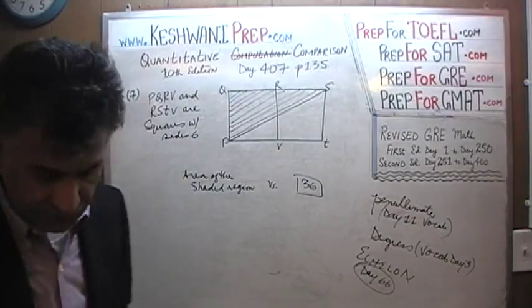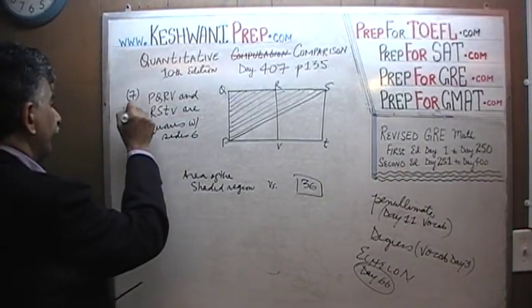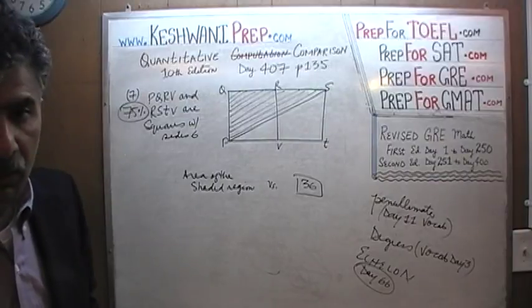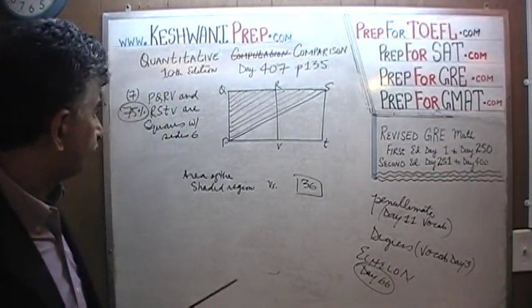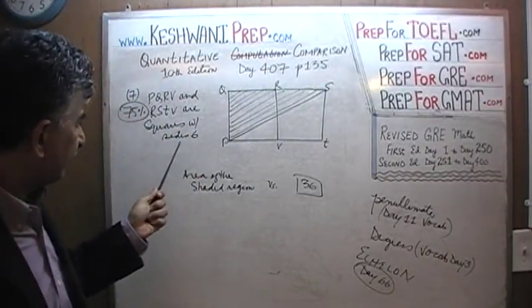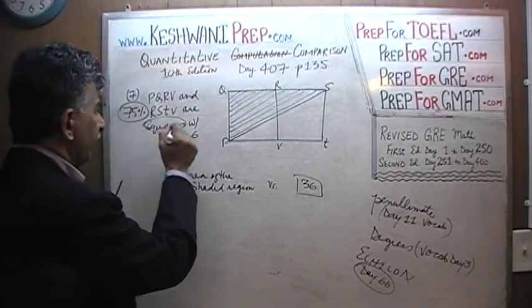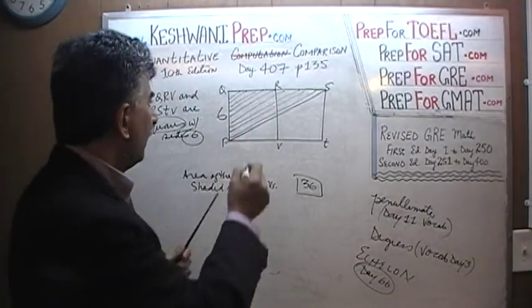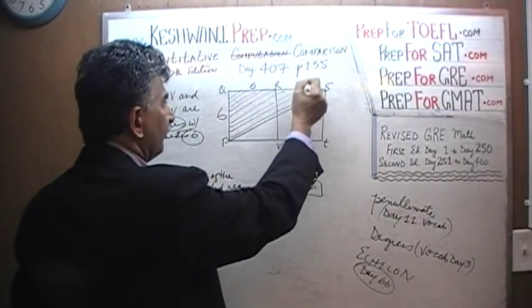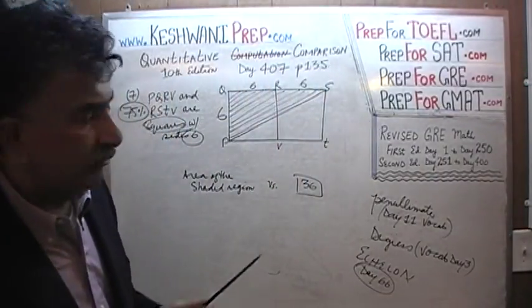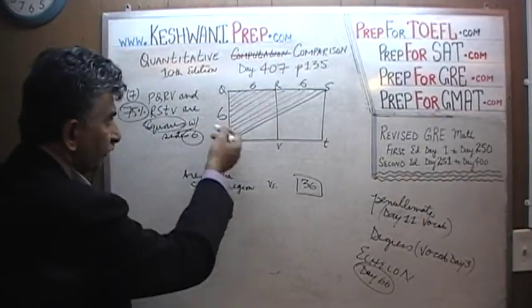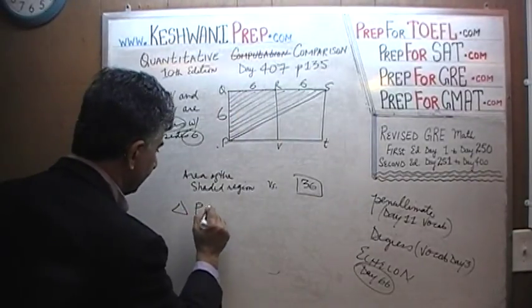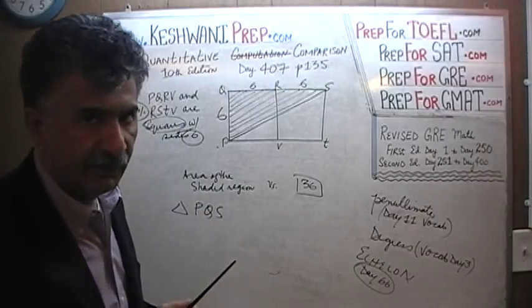Let's see what was the percentile on it. 75% of people who took the exam, three quarters of the people, had no trouble with it whatsoever. P to Q, we know each side is 6. We are told that these are squares with side 6. P to Q is 6, Q to R is 6, and R to S is 6. Now, we can look at this triangle, the shared region that we are talking about, which is triangle PQS.